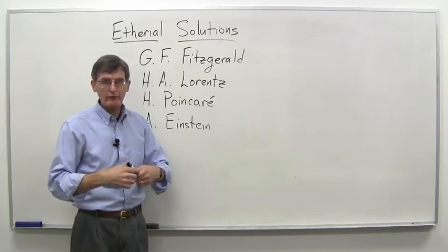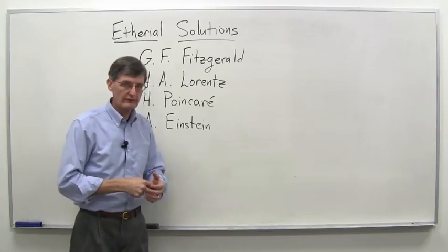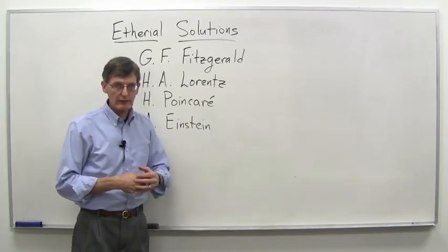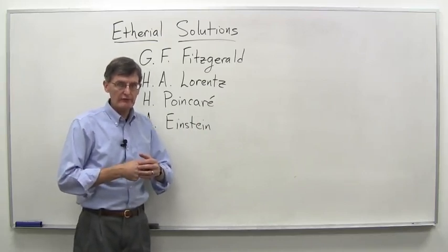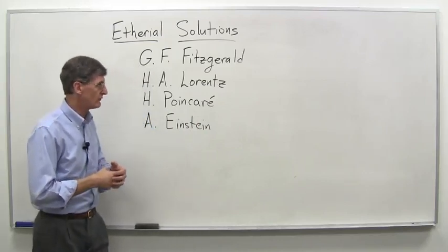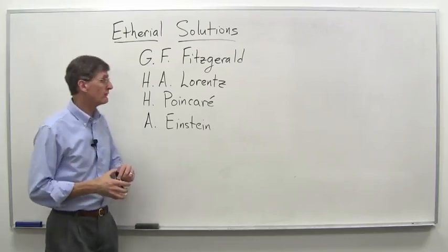And therefore we don't feel that ether wind or ether breeze, as it were, or experiments do not detect it. Yet other results like stellar aberration said no, the ether can't be dragged along by the earth if you're going to get the correct results for things like that. So it was a real puzzle, but there were some solutions that were proffered for it.